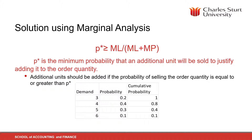We have the table here where we've got the demand and the probability of the demand, and we've set up a cumulative probability. This cumulative probability is the probability that the demand will be at least at this level. The probability that demand will be at least three is 1.0. The probability that demand will be at least four is 1 minus 0.2, which is 0.8. For five, it is 0.8 minus 0.4, which is 0.4. And for six, it's 0.4 minus 0.3, which is 0.1.